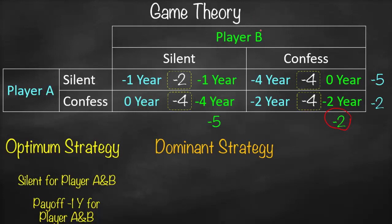Therefore, for player B the best strategy is to confess. Applying the same logic for player A: negative two is bigger than negative five, meaning spending two years is better than spending five years. So for player A, the dominant strategy is also to confess. Therefore, the dominant strategy for both player A and player B is to confess.